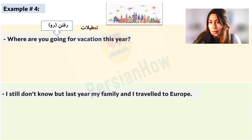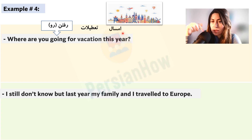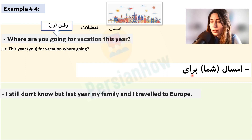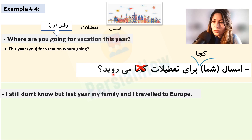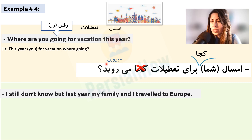Practice example 4: where are you going for vacation this year? 'Raftan' is to go, 'taatilaaat' is vacation, 'emsal' is this year — we say 'emsal,' not 'insal.' 'Emsal shoma baraye taatilat koja miravid?' We can move 'koja' earlier: 'emsal shoma koja baraye taatilat miravid?' — more emphasis on the question. Informally, 'miravid' changes to 'mirin': 'emsal shoma koja baraye taatilat mirin?'